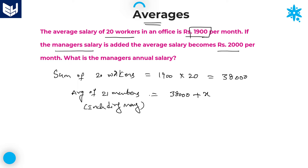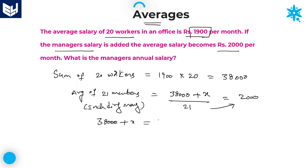I don't know the salary of the manager, so let us consider it as X. The total sum of 20 workers plus manager's salary X, divided by 21, equals 2,000. Doing cross multiplication: 38,000 + X = 21 × 2,000 = 42,000. From this, X = 42,000 − 38,000 = 4,000. That is the required answer.